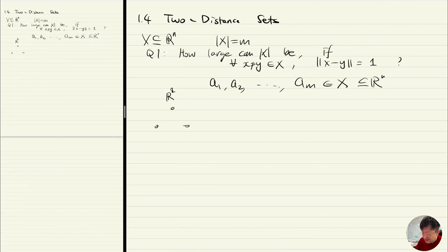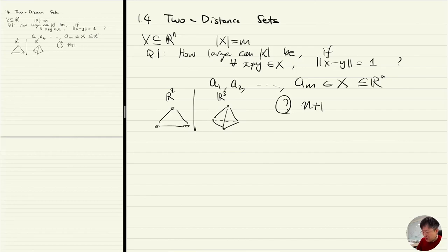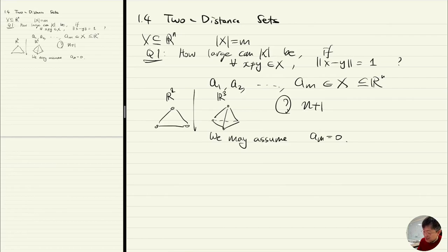What is the best possible? I think so — on R^3. It seems like maybe n+1 is the number of points. Actually it's easy. How do we solve that? Well, let's say we may assume the last point is zero — let's say a_m is zero, the zero vector in R^n. Then |a_i| = 1 for all i from 1 up to m minus 1.